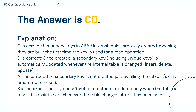The answer is C and D. C is correct: secondary keys in ABAP internal tables are lazily created, meaning they are built the first time the key is used for a read operation. D is correct: once created, a secondary key including unique keys is automatically updated whenever the internal table is changed — insert, delete, update. A is incorrect: the secondary key is not created just by filling the table; it's only created when used. B is incorrect: the key is maintained whenever the table changes after it has been used.